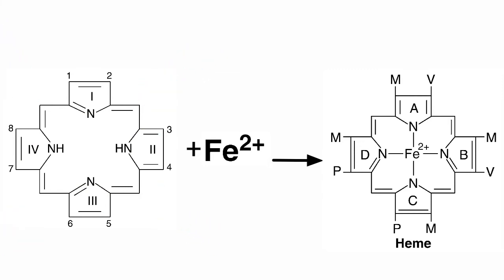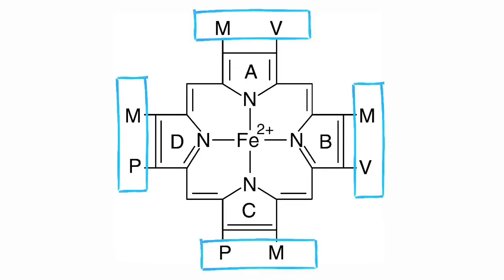The pyrrole rings are named as 1, 2, 3 and 4, and the bridges as alpha, beta, gamma and delta. Each pyrrole ring has two substituent groups. There are four methyl, two vinyl and two propionate side chain groups attached to the porphyrin ring.